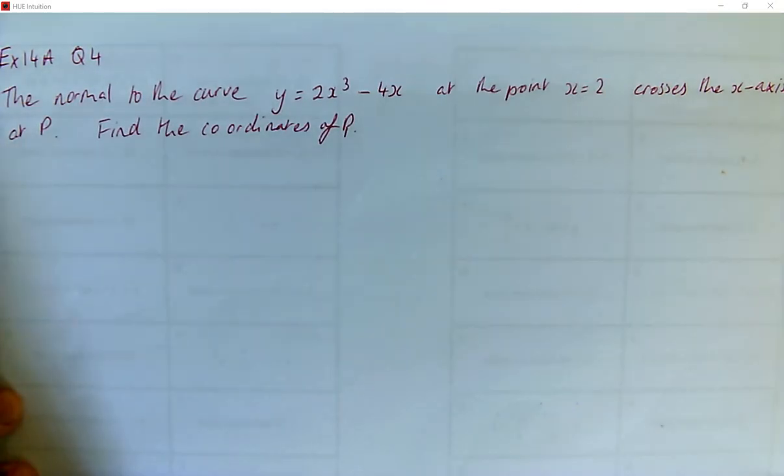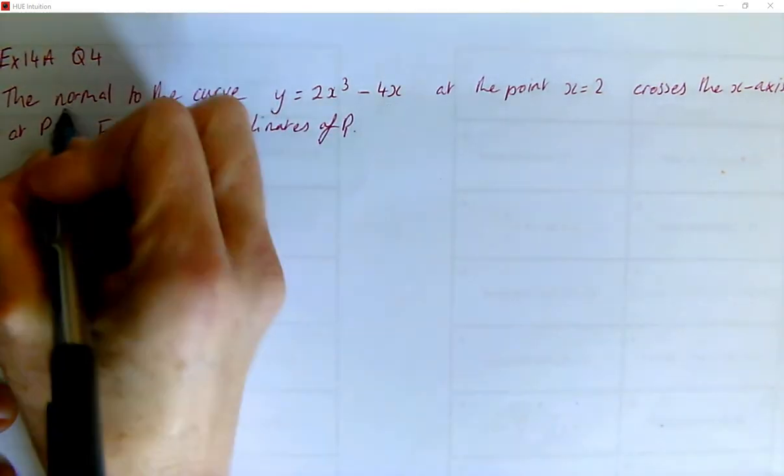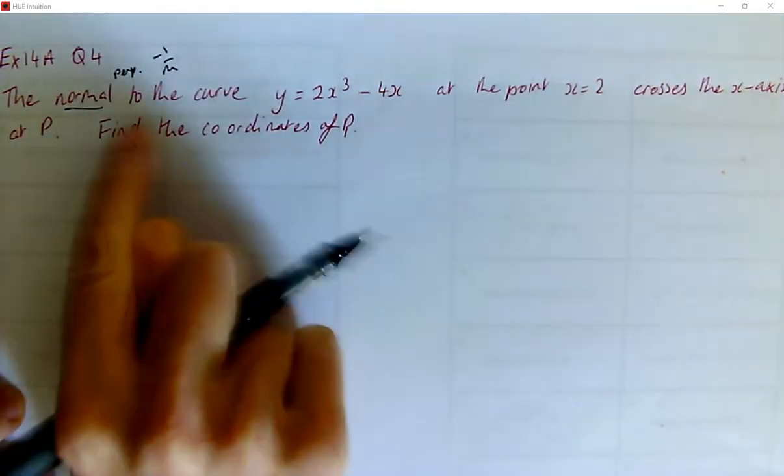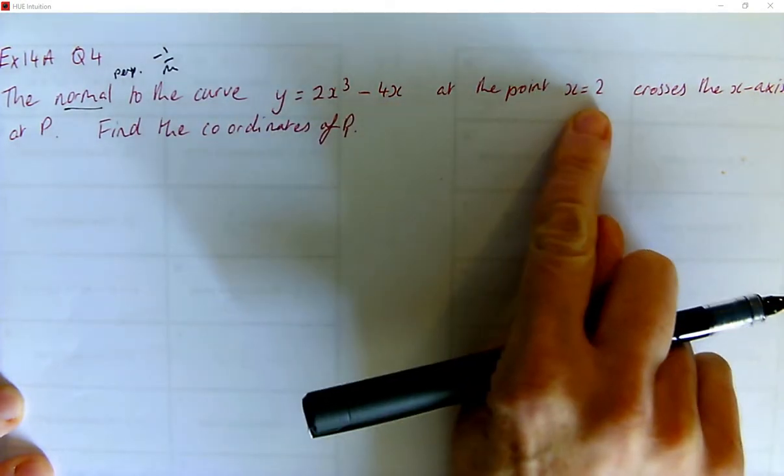Right, so we read very carefully. The normal to the curve, so remember that's perpendicular, so we know the gradient is like minus one over M to the curve y is 2x³ minus 4x at the point where x is 2.